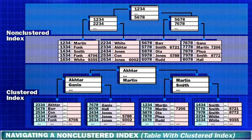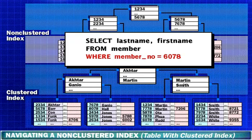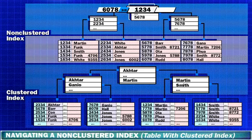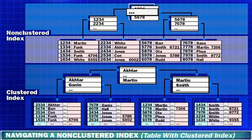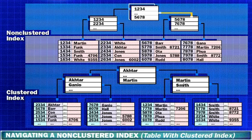Now let's take a look at how SQL Server navigates a non-clustered index using a clustering key. In this example, a non-clustered index has been created on the member number column. The table has a clustered index defined on the last name column. The query is searching for member numbers equal to 6078. SQL Server starts at the root level of the non-clustered index. It evaluates whether 6078 is greater than or equal to 1234 — true — then evaluates whether 6078 is greater than or equal to 5678 — also true. As 5678 is the last key value on the page, SQL Server moves to the next level to which 5678 points.